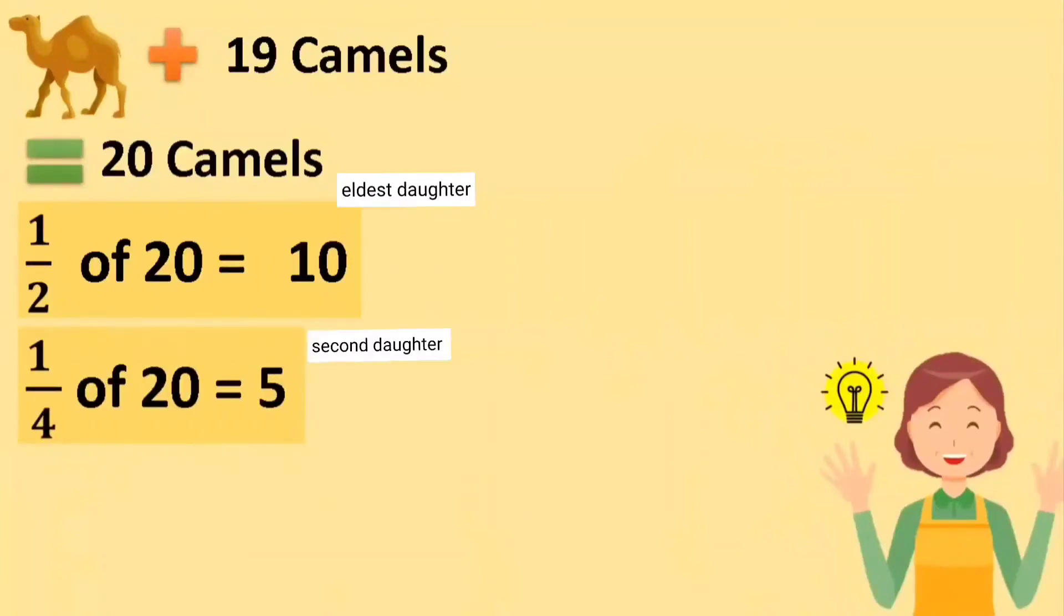Take your share. The aunt told the second daughter. She took one fourth of the camels and got 5 camels. You can take one fifth of the camels. The aunt told the third daughter. So she took 4 camels.